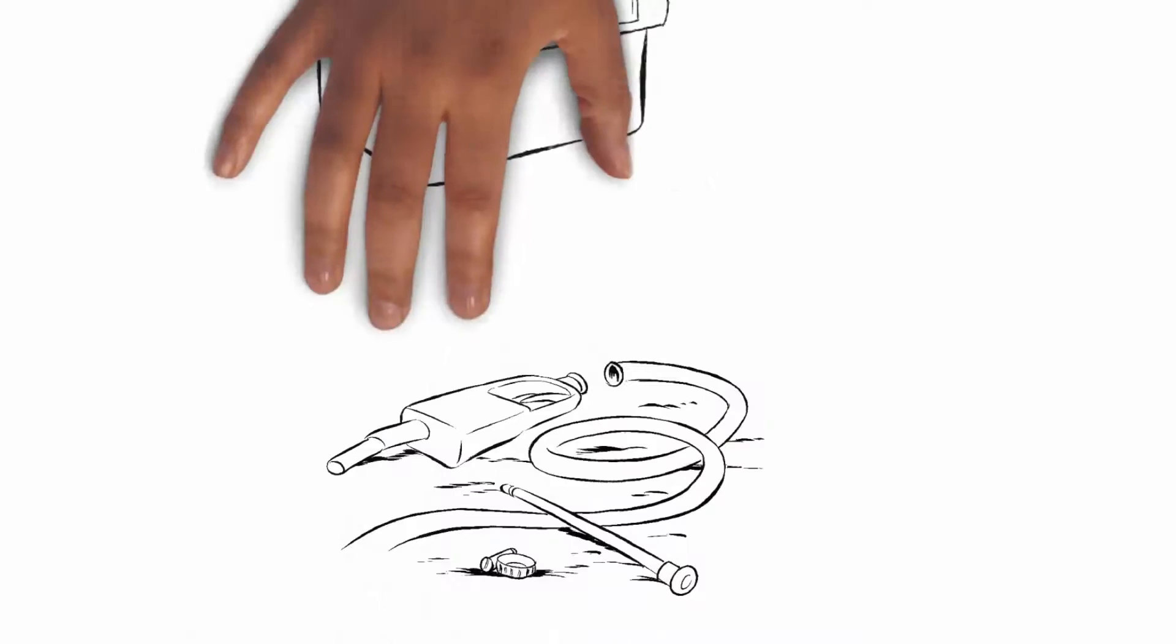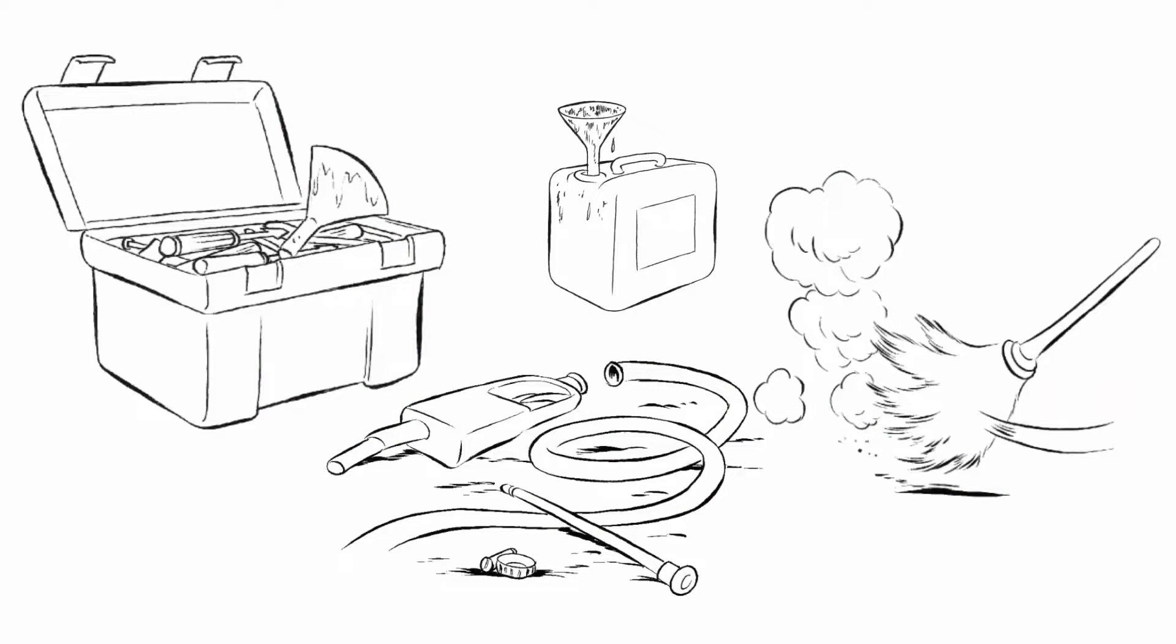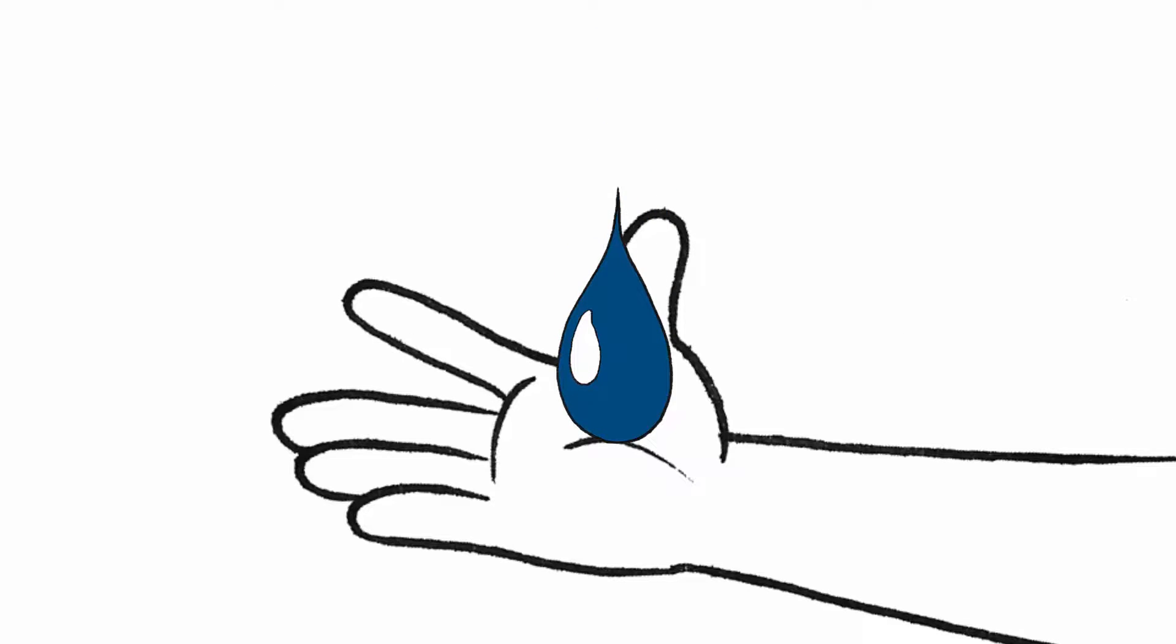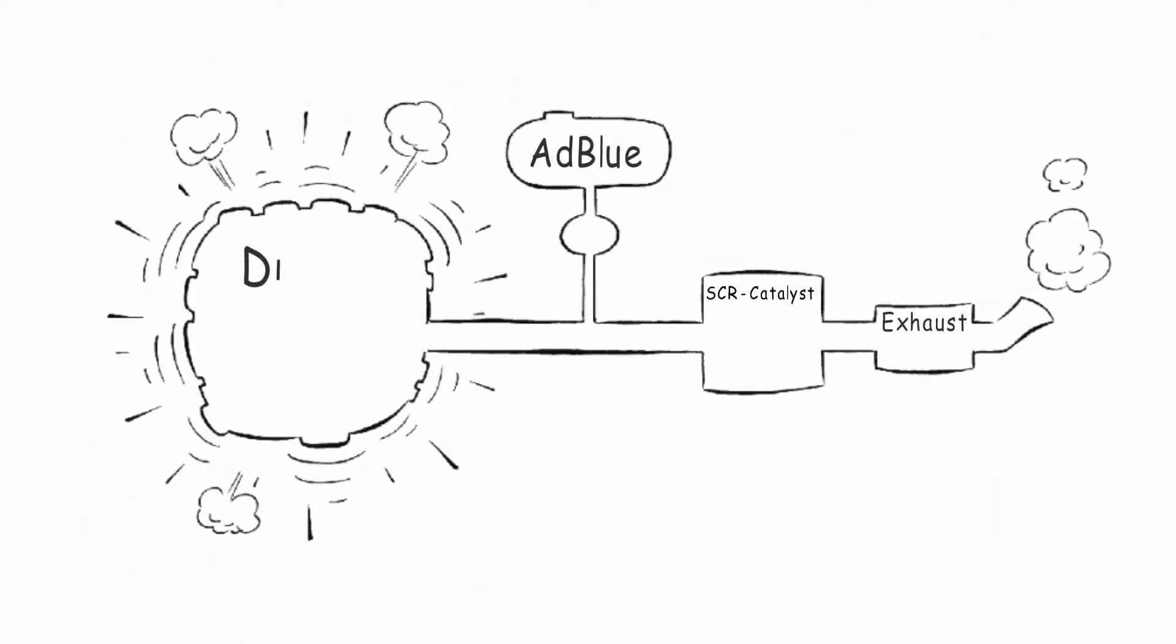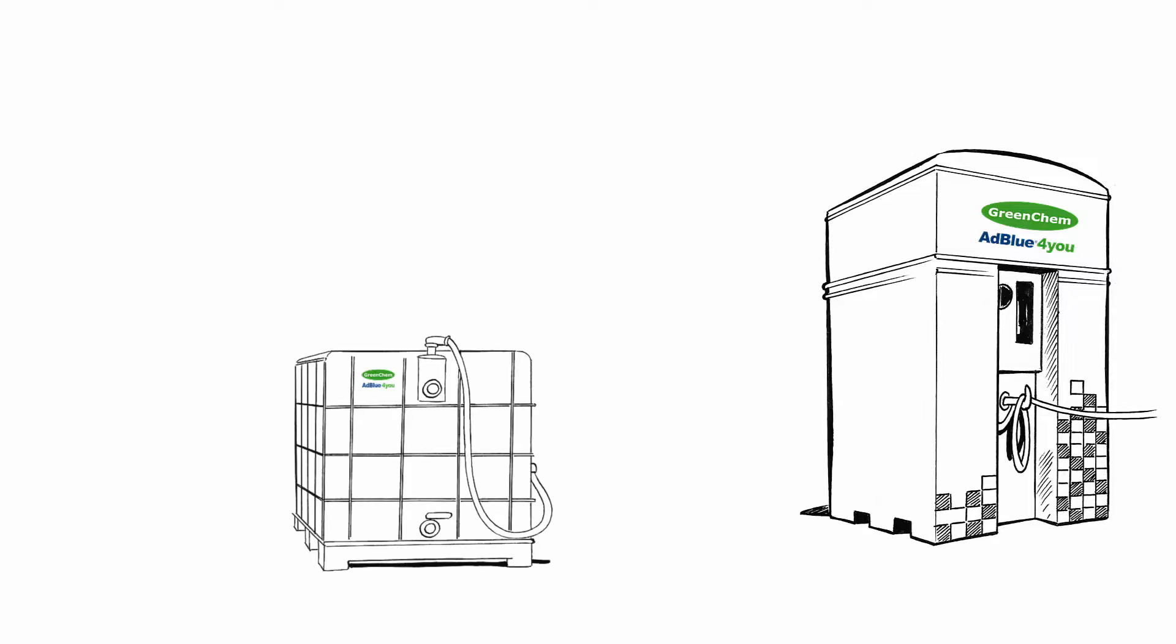Besides the product itself, the contamination can also occur when using incorrect dispensing and storage equipment. AdBlue is not dangerous if you get it on your hands, but many materials will rust or will dissolve into AdBlue and thus leaving particles into your catalyst, which will eventually cause a breakdown. Make sure you only use AdBlue approved materials for dispensing and storing AdBlue.